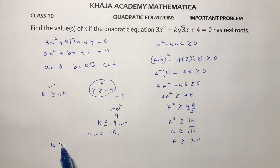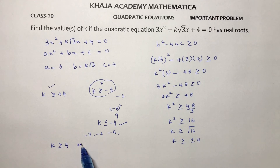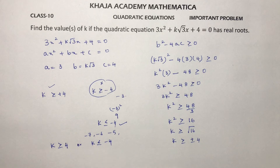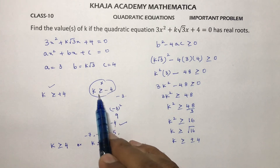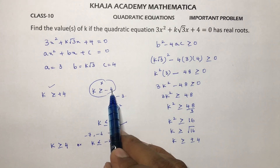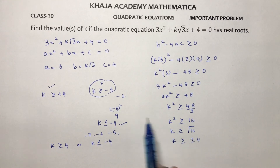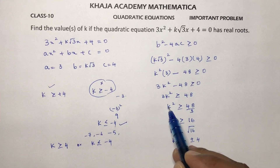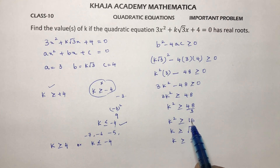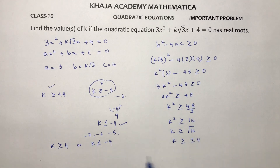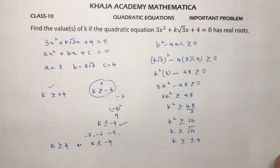Therefore, the answer is k ≥ 4 or k ≤ -4. Taking k > -4 gives values like -3 whose square is 9, which is not ≥ 16, so those are excluded. The final answer is k ≥ 4 or k ≤ -4.